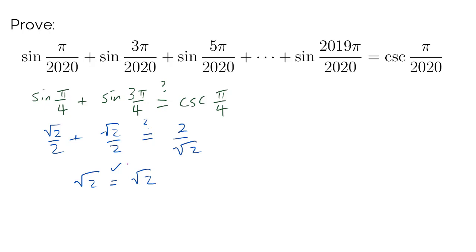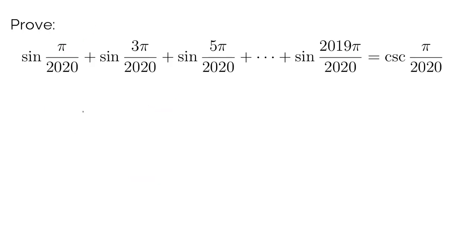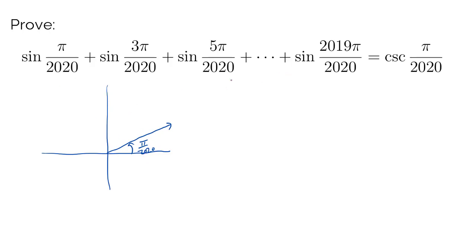It seems like we can generalize this, but let's stop just a bit. One objection is that we should be careful to consider when n is even or odd, because when n is odd we lose some inherent symmetry. To illustrate: when n is 2020, pi over 2020 is some small angle, and 2019 pi over 2020 is going the angle of pi then going backwards pi over 2020, giving us symmetry between the first and final angle.